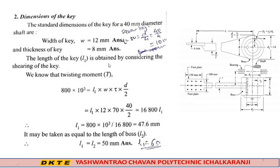Next, dimensions of the key. The standard dimensions of the key for a 40 mm diameter shaft: considering a square key, W equals D/4 equals 40/4 equals 10. We'll take width of the key W equals 12 mm and thickness of the key equals 8 mm.